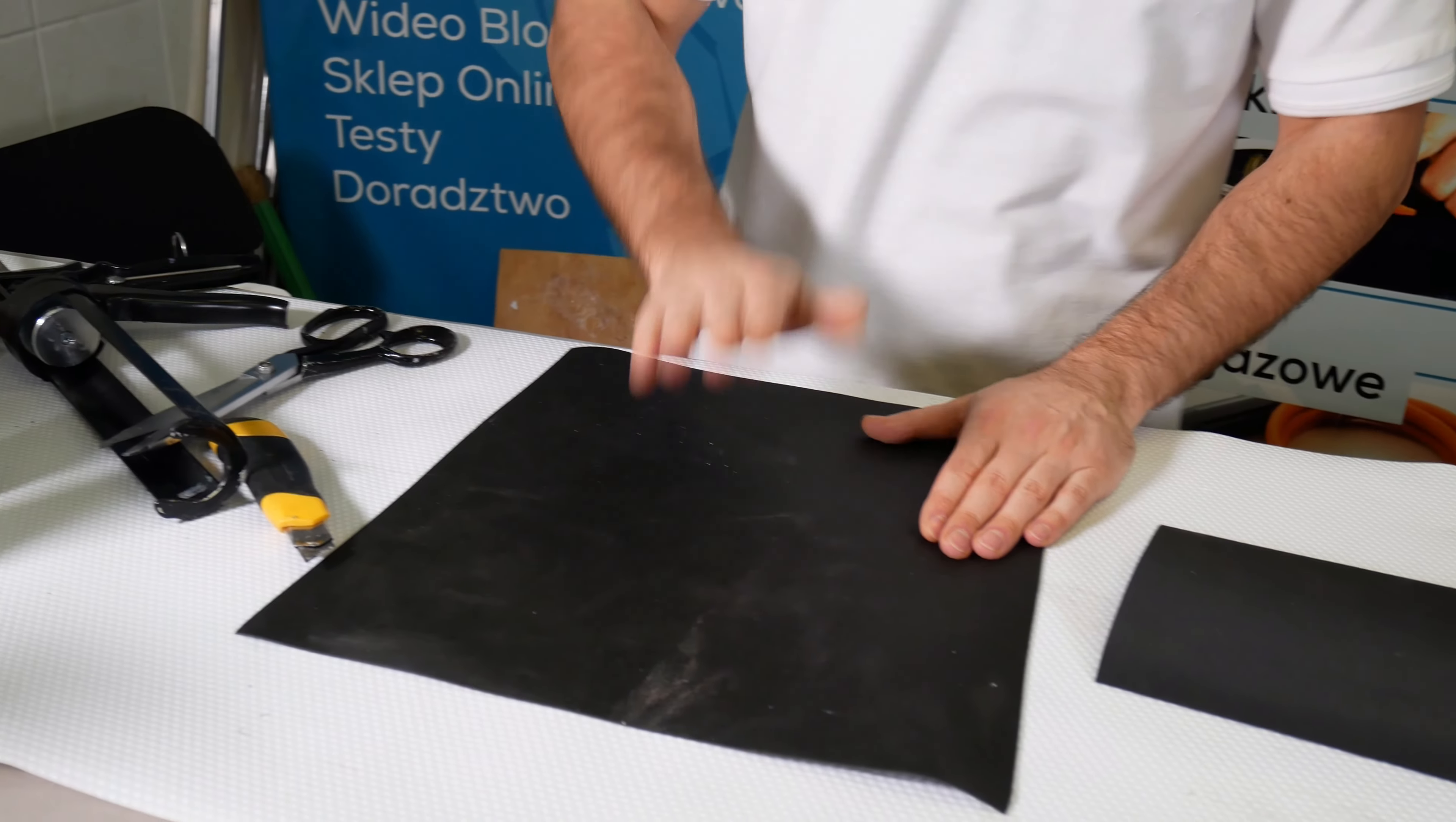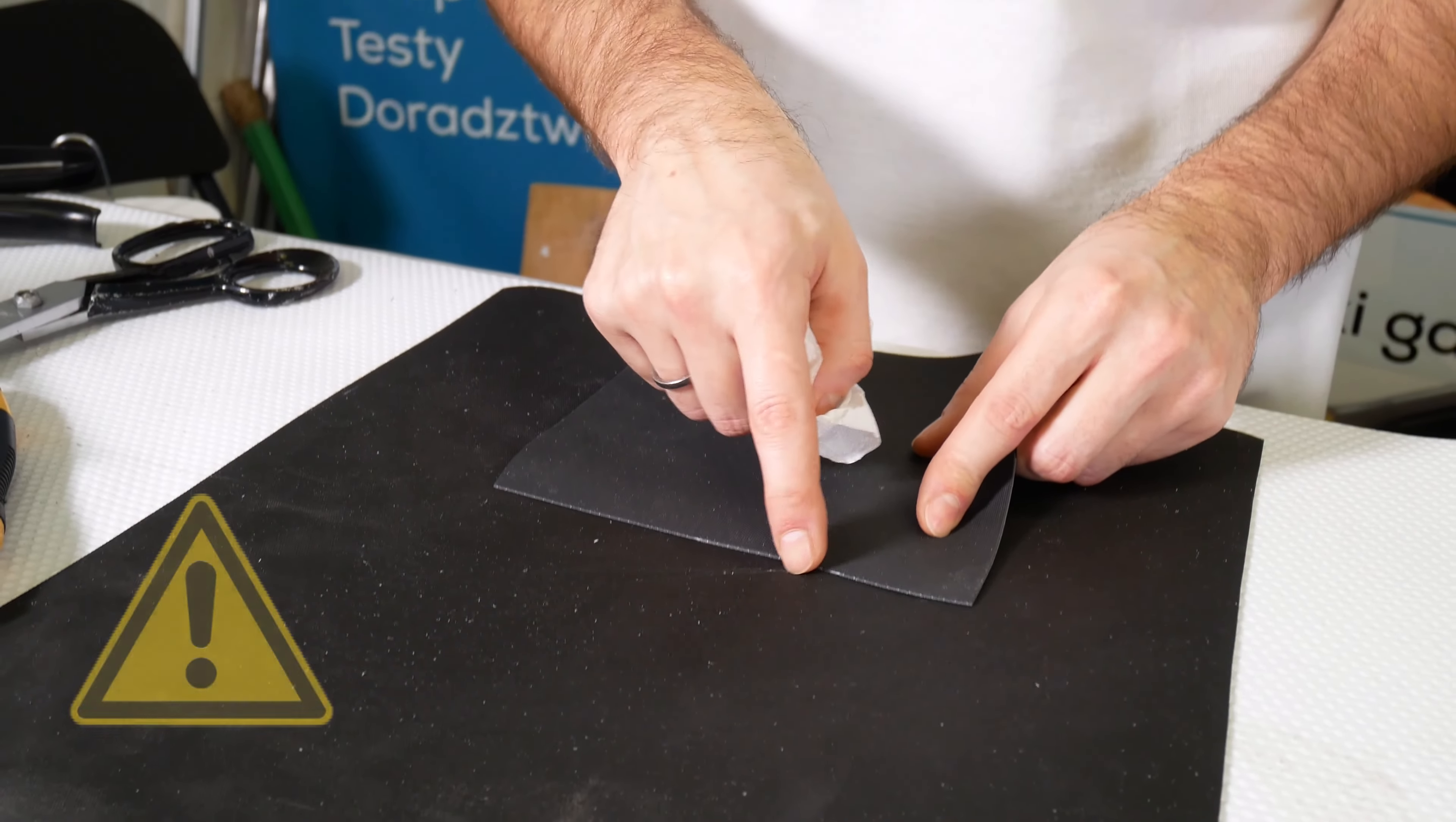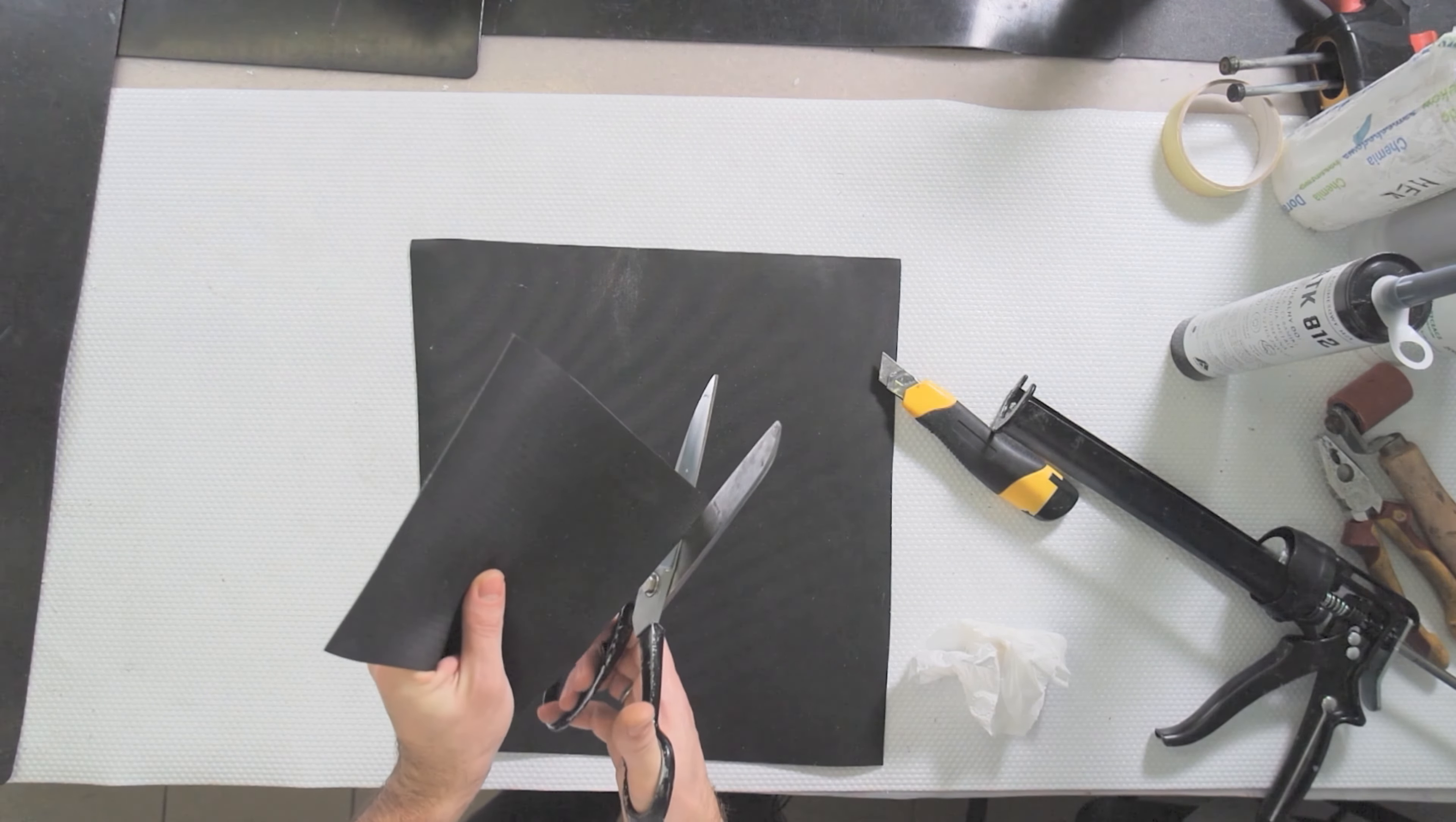The most important thing is to degrease the surface. Alcohol is the best. If you have acetone on hand, it is even better. The patch should be about five centimeters from each edge. We have to trim with most important rounded corners.